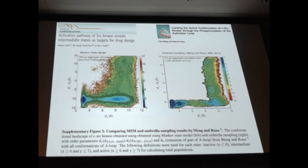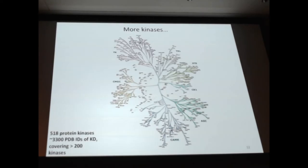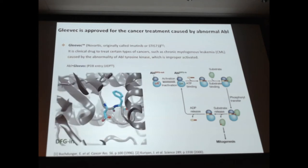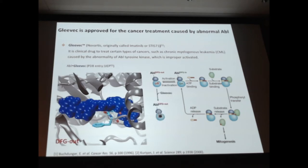This was done on c-Src, which is one of the main kinases. But there are lots more kinases in the human kinome, and we're very interested in understanding what's different about them. One kinase of great interest is c-Abl kinase, which binds Gleevec. If you focus on Gleevec, what you see is the famous DFG motif. This is DFG-in, and then the DFG comes out, and now Gleevec can bind. The DFG-in and DFG-out is an important motif that affects the binding of these drugs.